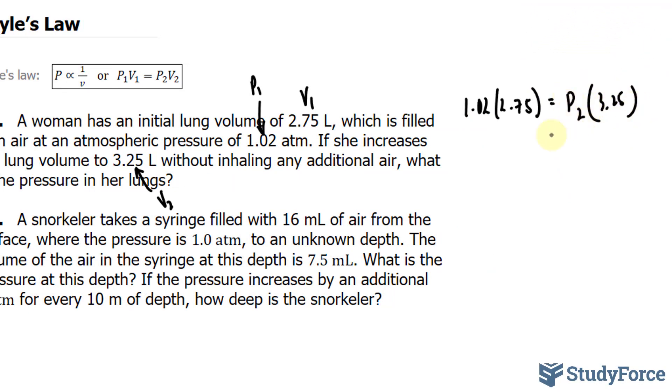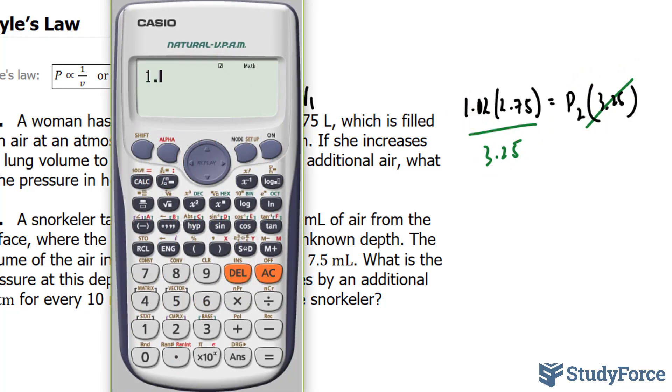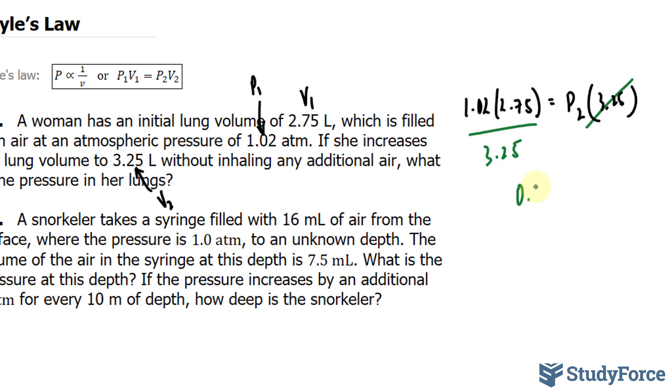All we have to do here is divide both sides of this equation by 3.25. This will give us 3.25 underneath these two factors. Using our calculator, it's a simple calculation, 1.02 times 2.75 divided by 3.25, and this gives us 0.8630 as P2.